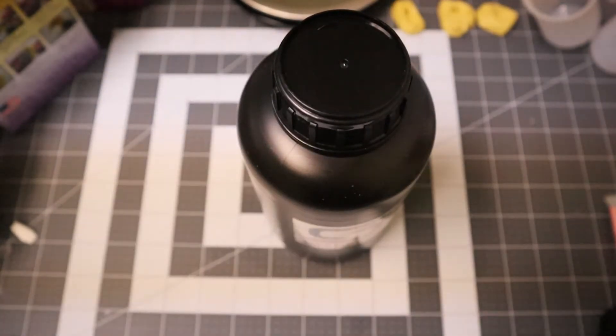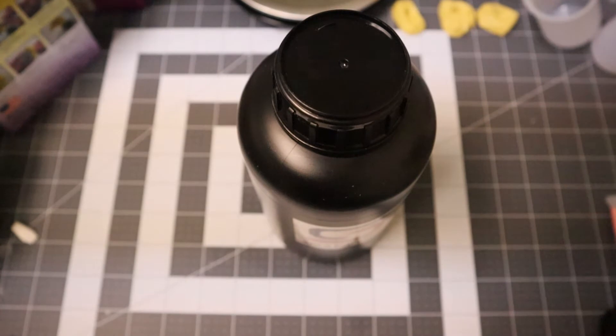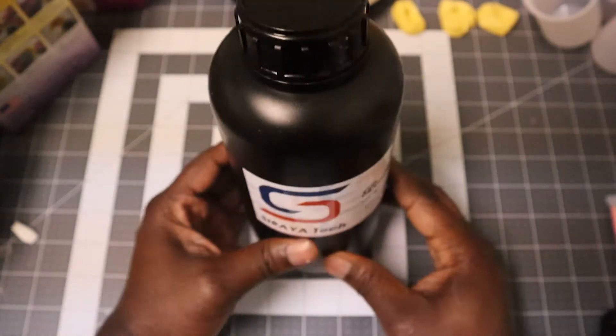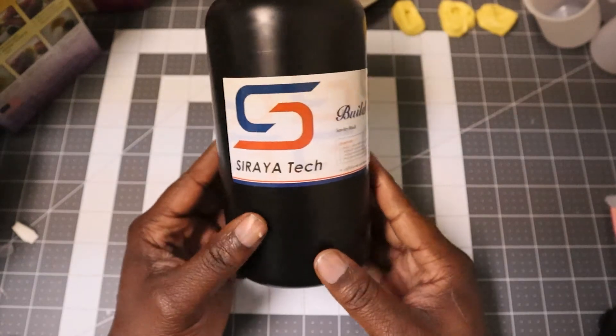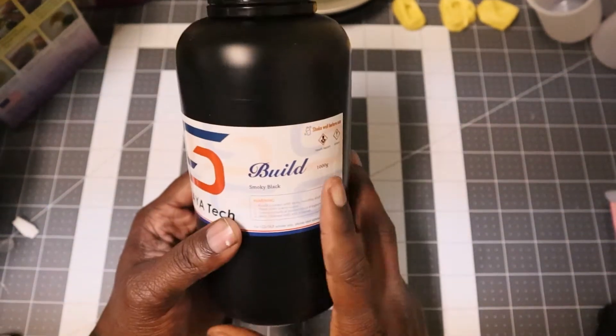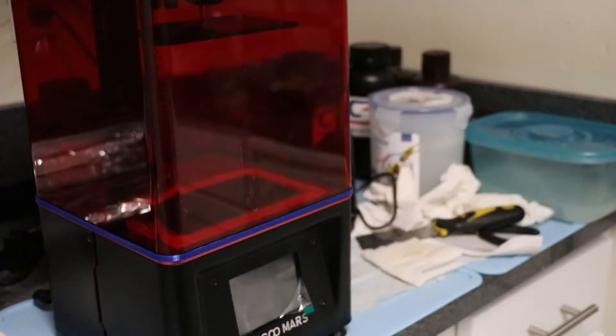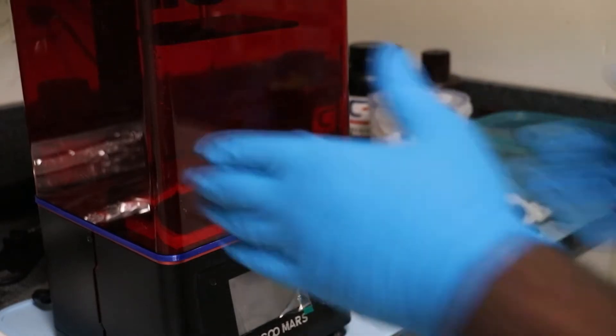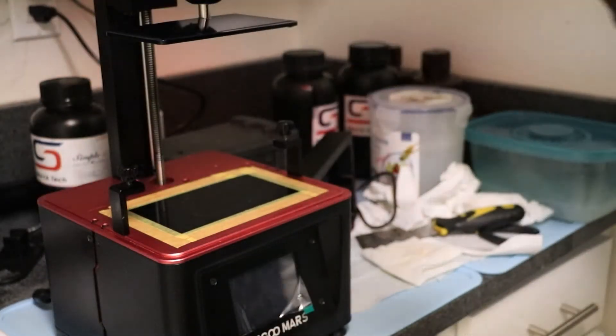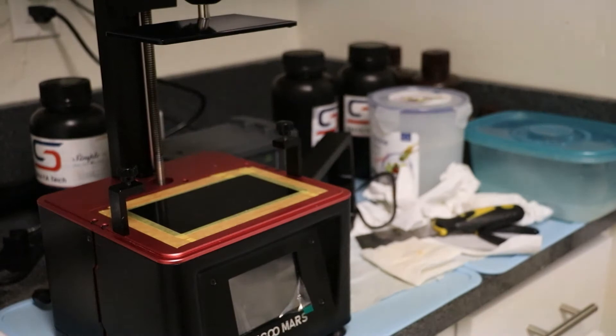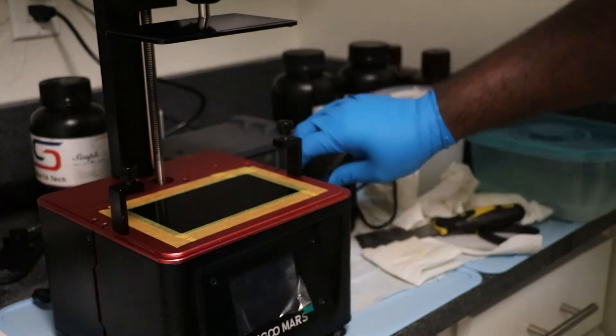I find that taking the lid out of the box and then pushing the bottle out of the styrofoam is a quick fix for that. So this is their Build resin. As usual, it's a thousand gram bottle, and so far it seems they only make it in one color, smoky black. Now I'm going to set up for my test prints.